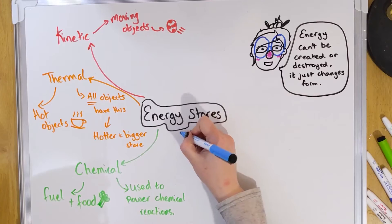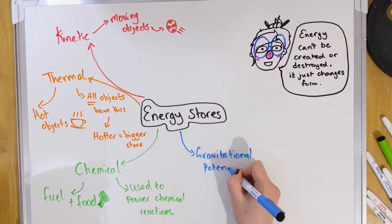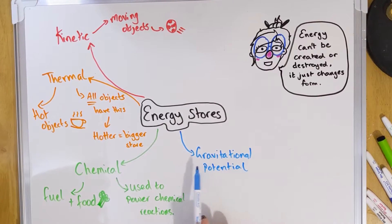Our next store is gravitational potential energy. Gravitational potential is a strange one. You might link gravitational to gravity pulling things down, but it's actually the opposite — things that are raised above ground level have greater gravitational potential. So if you're going to skydive out of an airplane, you'll have a lot more gravitational potential than someone watching from the floor. The higher something is, the greater the gravitational potential.